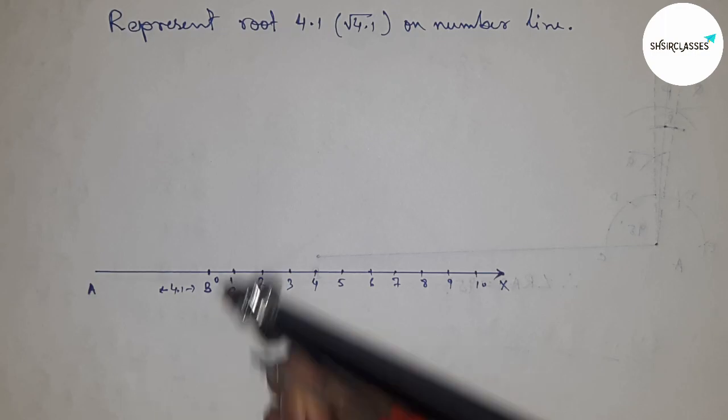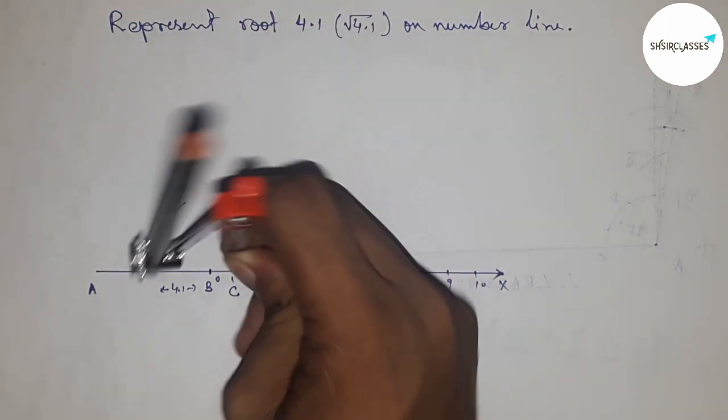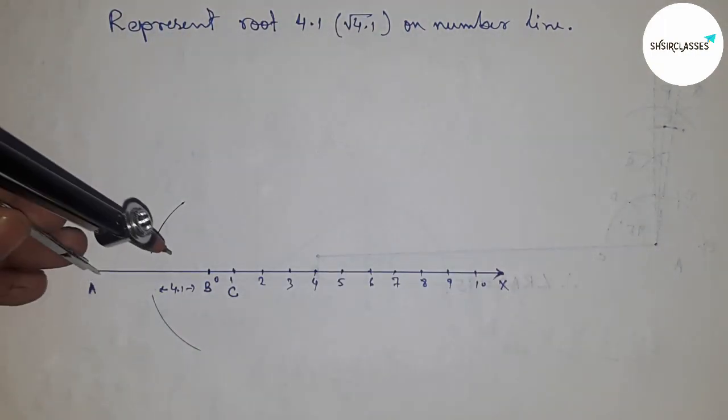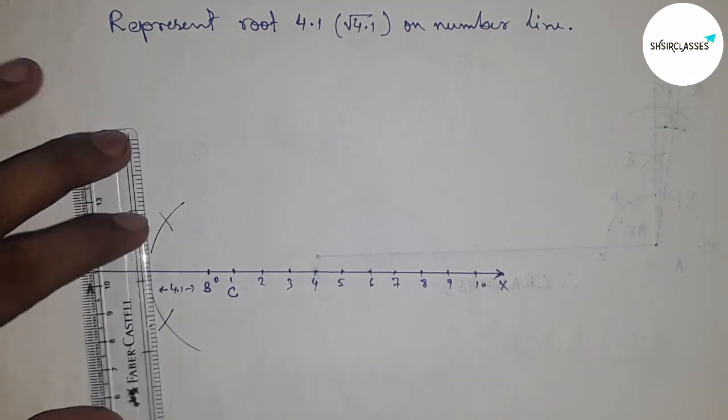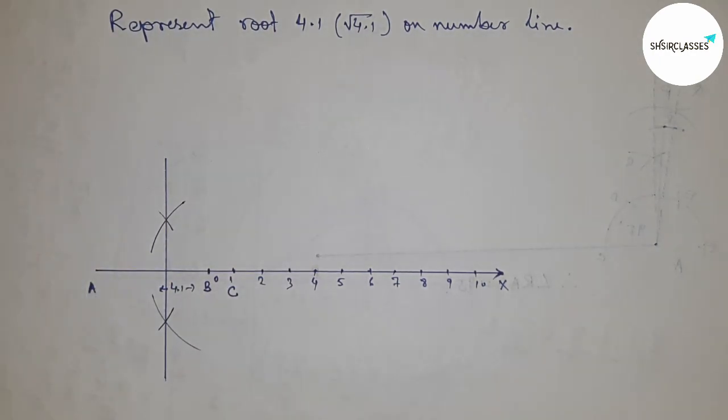Next, bisect line AC by taking greater than half of AC and drawing arcs with the same length that cut line AX. Join these points, which bisect at point O.